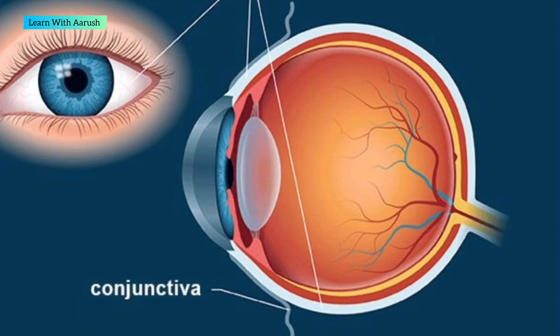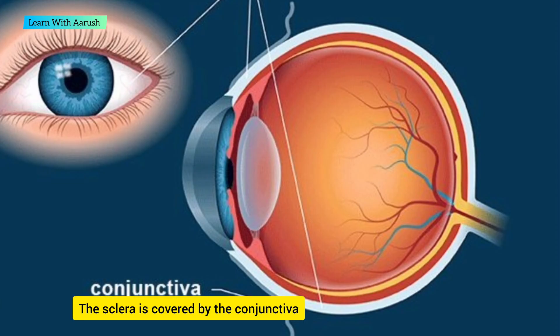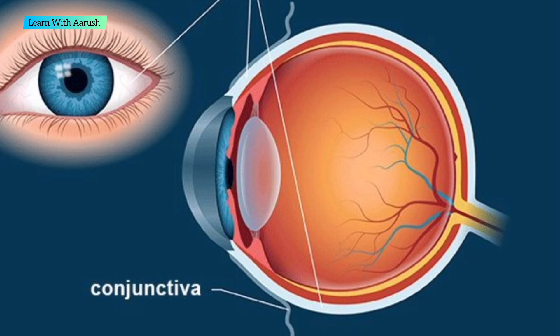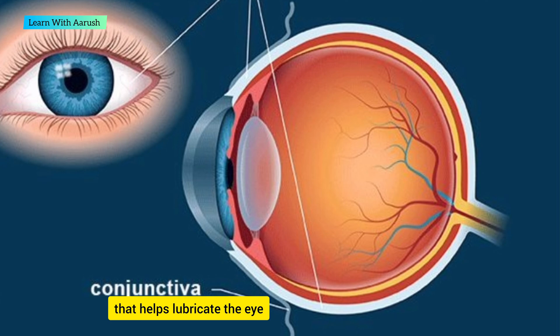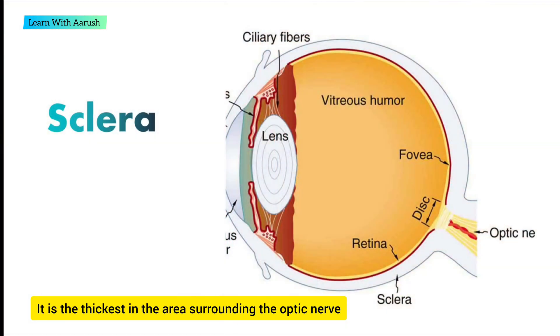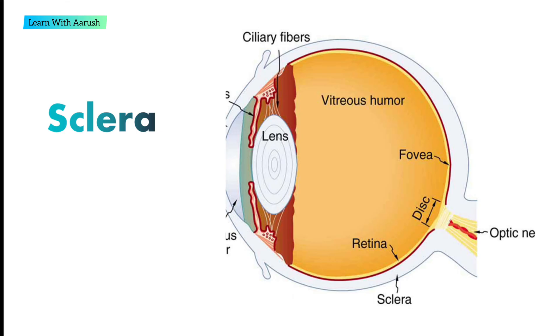The sclera is covered by the conjunctiva, a clear mucus membrane that helps lubricate the eye. It is the thickest in the area surrounding the optic nerve.